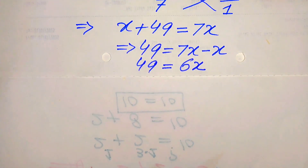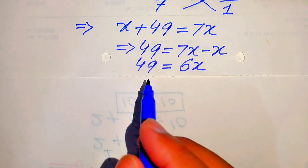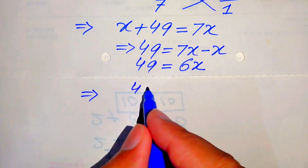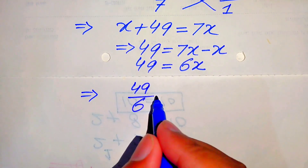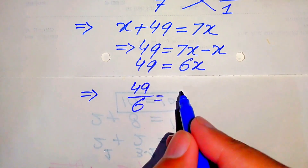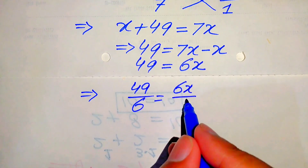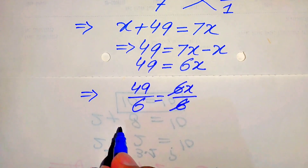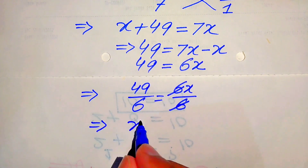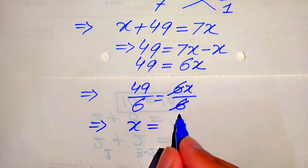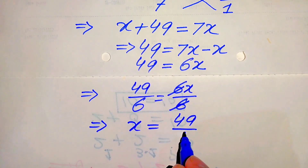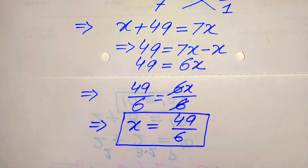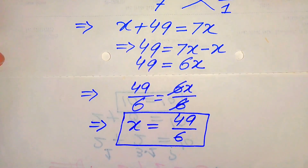Since we are solving for x, we divide both sides by 6. After dividing, 49 over 6 equals 6 over 6 times x, this 6 is cancelled out by this 6, and the value of x equals 49 over 6. This is our second value of x obtained from the second method.